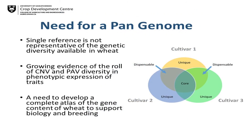The need for a pan-genome is clear — a single reference is not representative of the genetic diversity available in wheat. There is growing evidence of the role of copy number variation and presence-absence diversity in phenotypic expression of traits, and we see that in our own program. Getting at the unique genes within cultivars and the dispensable genome is something we're really interested in. There's a clear need to develop and complete an atlas of the gene content of wheat to support biology and breeding.